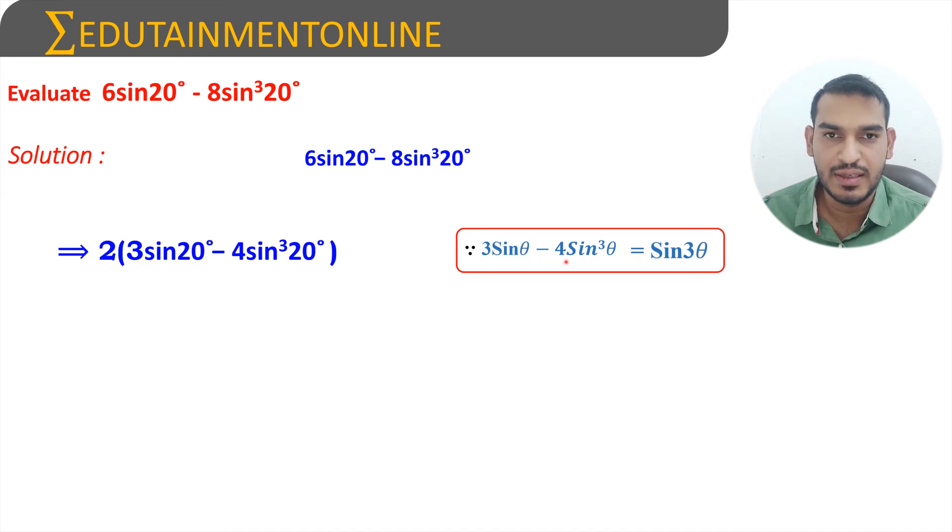Three sine 20 degrees minus 4 sine cube 20 degrees equals sine 3 theta. Therefore this can be written as 2 into sine of 3 into 20 degrees. Three times 20 is 60 degrees, so 2 into sine 60 degrees.